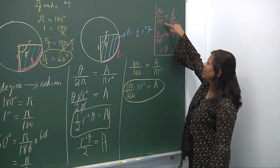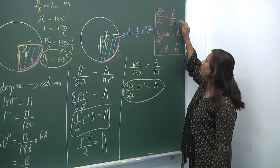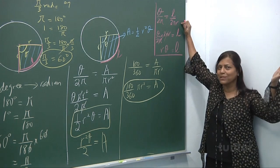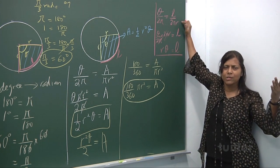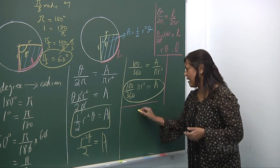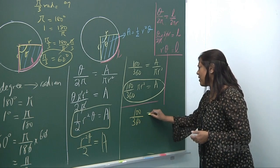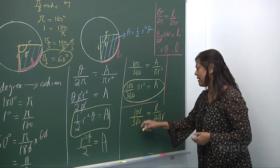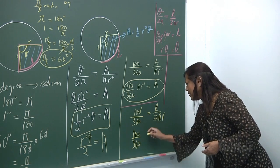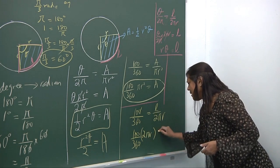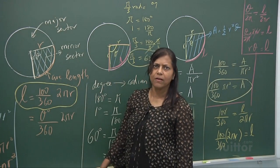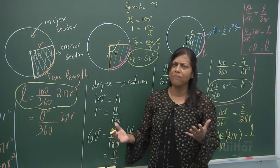The arc length equals Rθ — angle over angle, length over length. You should not put L over πR² because that's length over area. It must be length over length: arc length over 2πR. So 100 degrees over 360 degrees equals arc length over 2πR. Bring 2πR up and that's your arc length. You can see it's a fraction of the length of the whole circle.